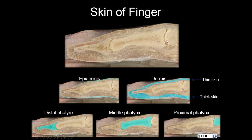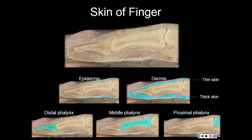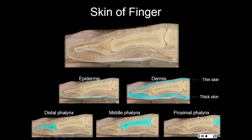Here is the skin of the finger. We have the epidermis layer highlighted in blue, and the dermis layer lying right underneath. On the superficial part of the finger you have thin skin, where you find hair follicles. On the thick skin area — like the palms of the hands and tips of the fingers on the inner aspect — you don't have hair, but it does have sweat glands. You can also see the distal, middle, and proximal phalanges.